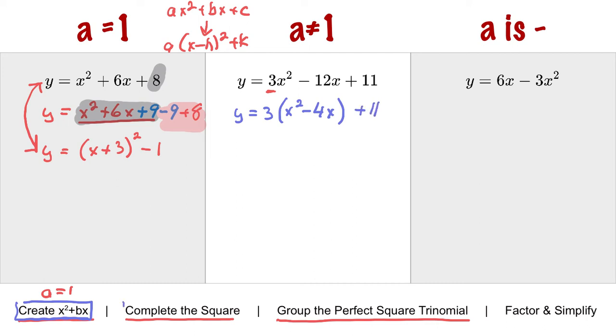And now the process is the same. I'm going to complete the square from the bracket. So there's probably one or two more steps here. x squared minus 4x. Half of negative 4 is negative 2. Negative 2 squared is 4. So I'm going to add it, take it away, and then plus 11.